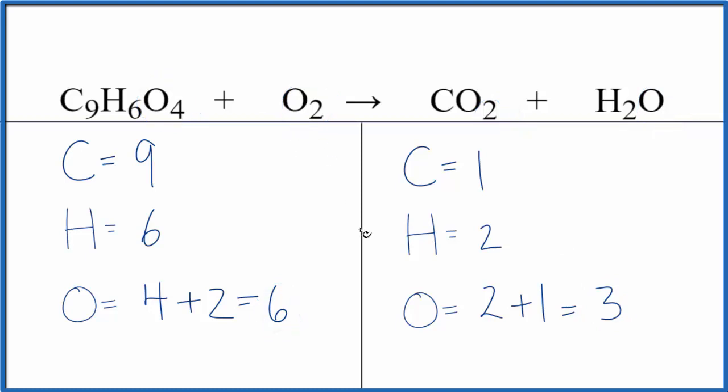Let's leave the oxygens to last because when we change this coefficient here, it won't change the number of carbons or hydrogens. So we'll do the oxygens last. Let's say nine carbons. One times nine. That'll give us nine carbons.